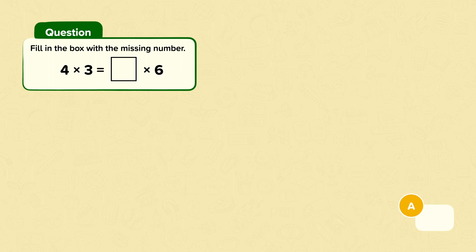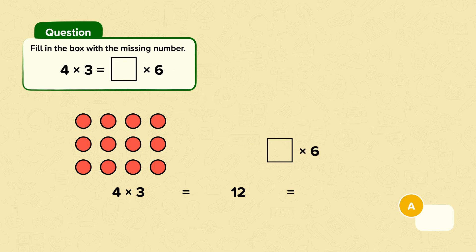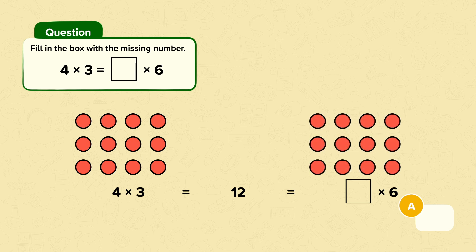Fill in the box with the missing number. First, we know both sides of this equation must be equal to each other. We can use this number array to help find four times three. Four groups of three, or four times three, equals twelve. So we know twelve equals something times six. How many groups will we have if we divide twelve into groups of six? Here is twelve — we need to divide it by six, and we have two groups.